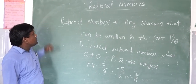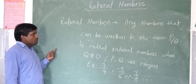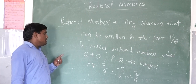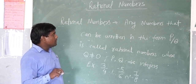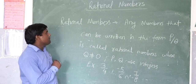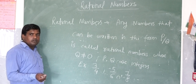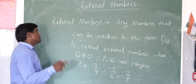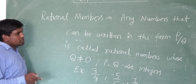One important thing is the difference between a rational number and a fraction. We studied fractions in class 6. Rational numbers may be positive or negative, but a fraction is always positive. Fraction is also in the form of P by Q, but it is always positive, whereas a rational number may be positive or negative.